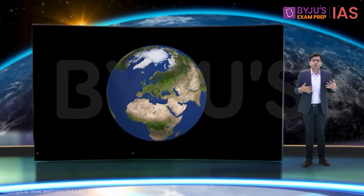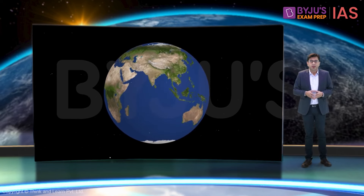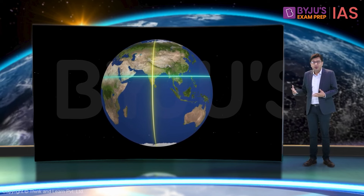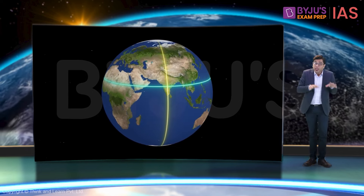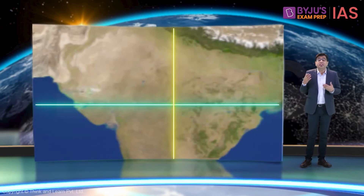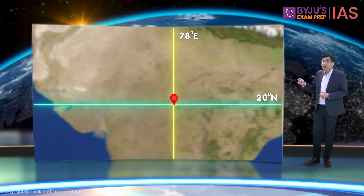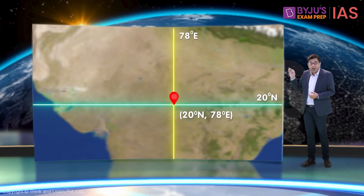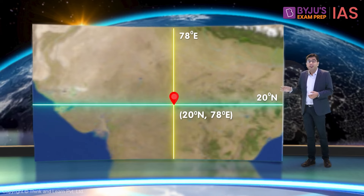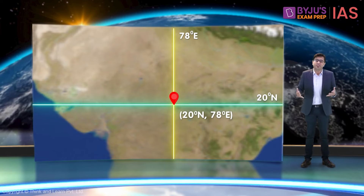Now let's see how latitudes and longitudes are used to locate places. A place is located where both lines intersect. For example, the location of a place written as 20 degrees north, 78 degrees east means it is located at the point where the 20 degree north latitude coincides with the 78 degree east longitude. The value of the latitude is always written first.